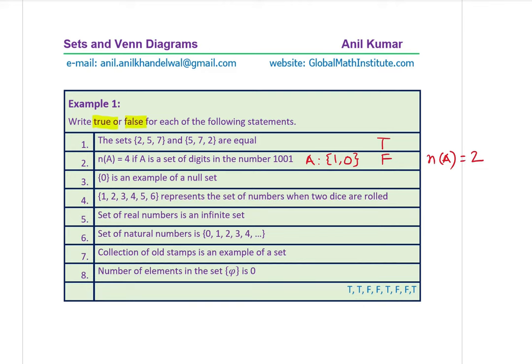Third: the set {0} is an example of a null set. That is false — it has one element, which is 0, so it is not a null set. Fourth: {1, 2, 3, 4, 5, 6} represents the set of numbers when two dice are rolled. When one die is rolled you get numbers 1 through 6, but when two are rolled you get combinations of those numbers, so this statement is also false.